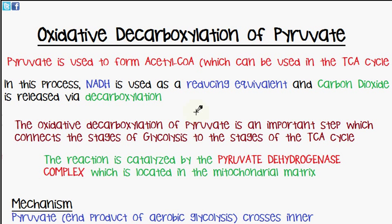In today's video we'll be discussing the oxidative decarboxylation of pyruvate. Pyruvate is one of the molecules formed from glycolysis, and it is used to form acetyl-CoA, which is eventually used in the TCA cycle, or the citric acid cycle.